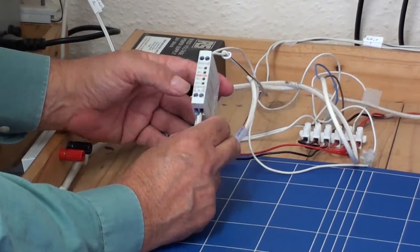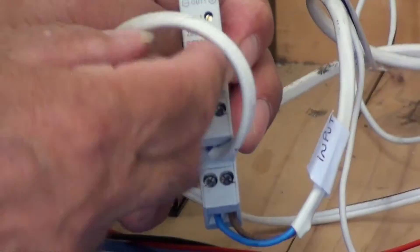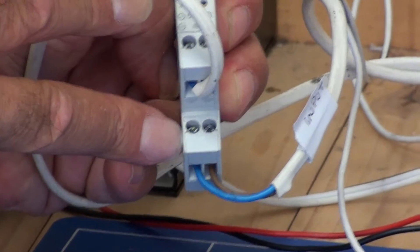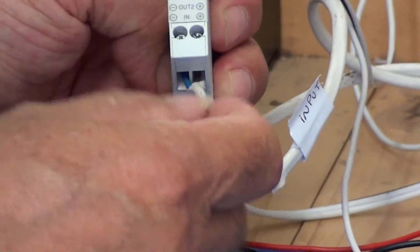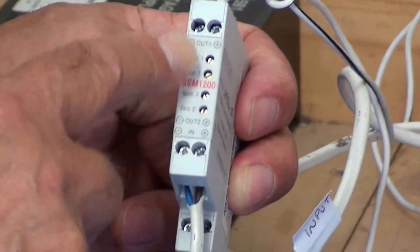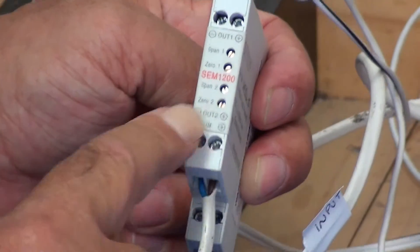Looking at the SEM1200, down at the bottom here, these are the input terminals, one input signal, and here we have our outputs for the two loops. Output 1 at the top, output 2 down here.